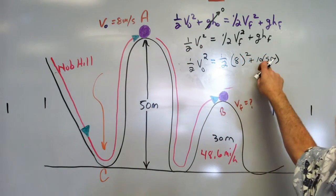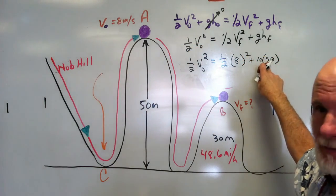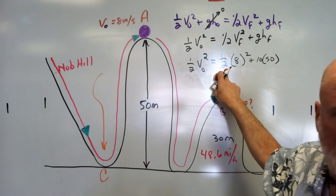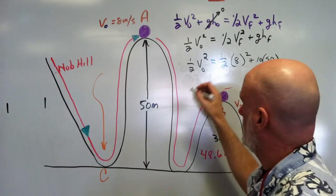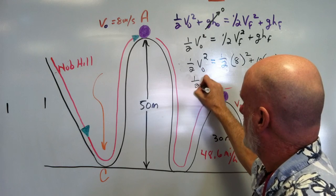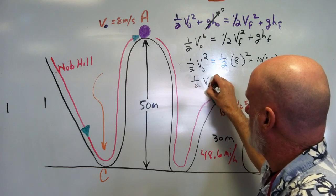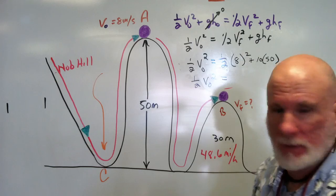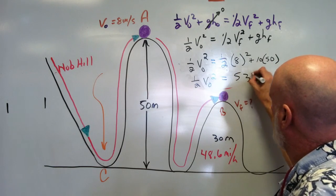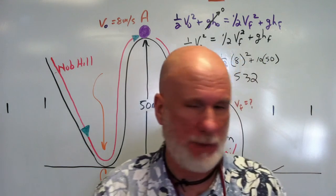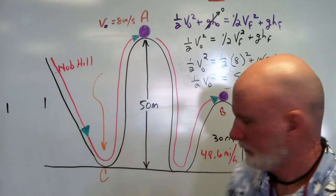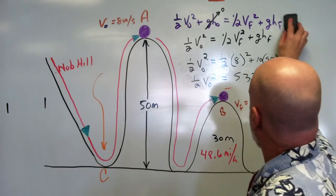Right, clear? And what's that going to be? 32. So it'll be ½V₀² equals 532, correct? You with me? Yes. So now, get rid of all this.